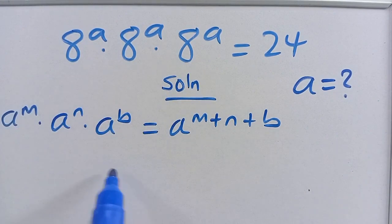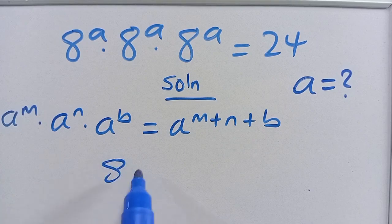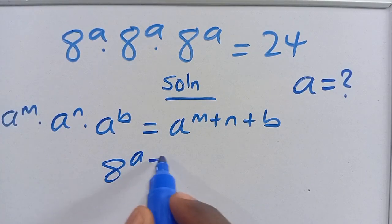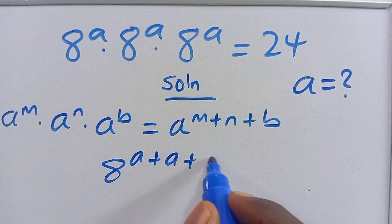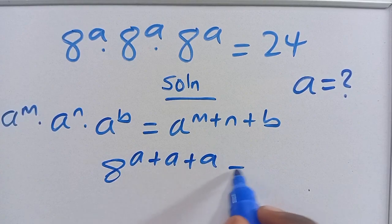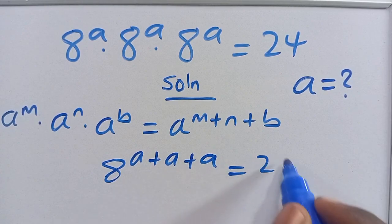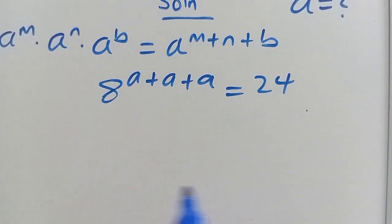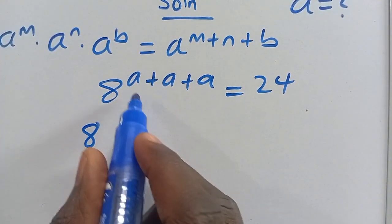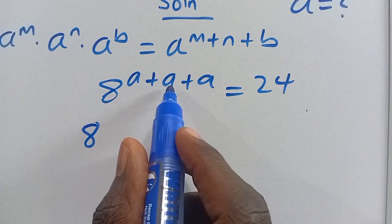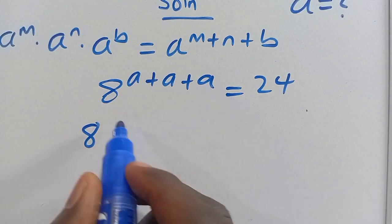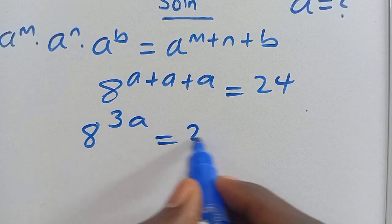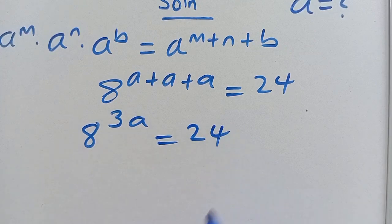So we have 8 to the power of A plus A plus A, which equals 24. Therefore, 8 to the power of 3A equals 24.